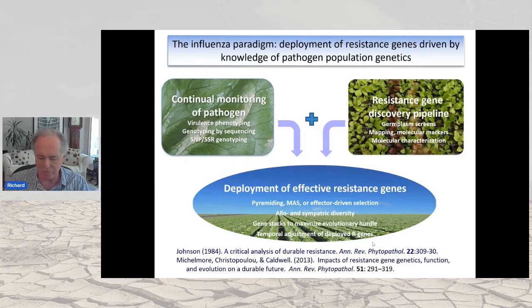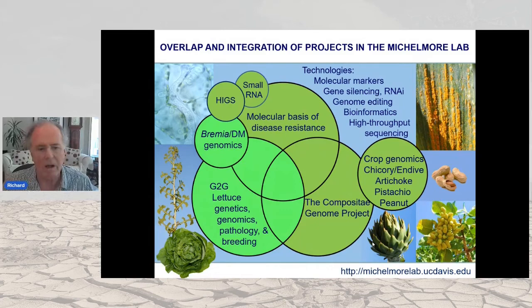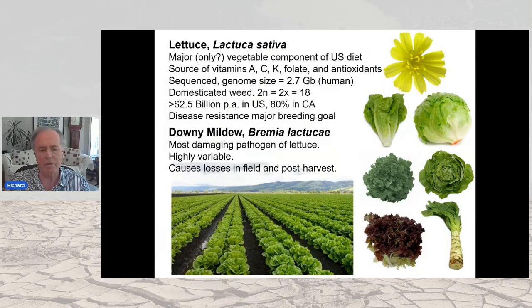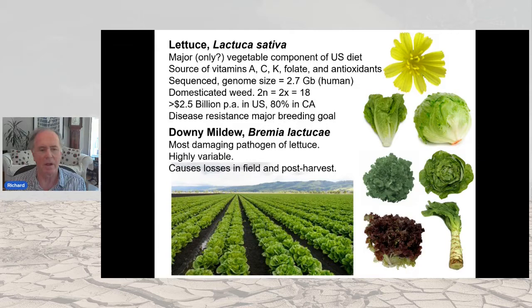My lab works on a number of different projects. I'll touch briefly on Bremia genomics — that's lettuce downy mildew — and some lettuce genetics. Lettuce is a very important crop, particularly in California. In Brazil, lettuce production is much more local around major cities, whereas in the U.S., very large fields particularly in California and Arizona supply the whole country. This sets the scene for epidemics, and the major pathogen is lettuce downy mildew.